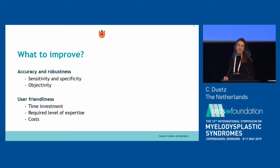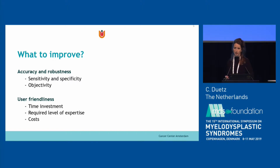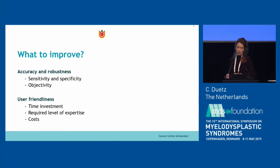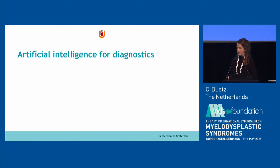We think there is room for improvement in these scores. Sensitivity and specificity in low blast count MDS is around 80 to 85 percent for the IFS. There is also room for improvement in objectivity, since it's sometimes difficult to say whether a cell is positive or negative. Moreover, user friendliness is an issue — it takes up to an hour to analyze one patient and requires a high level of expertise, making it a costly analysis. So we thought maybe we can use artificial intelligence to solve all these challenges.